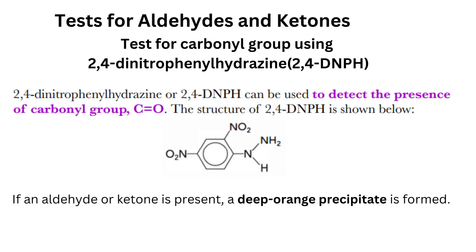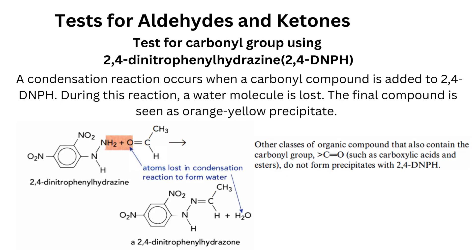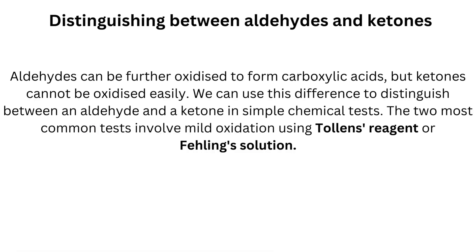Test for the carbonyl group using 2,4-dinitrophenylhydrazine (2,4-DNPH): 2,4-DNPH can be used to detect the presence of a carbonyl group. If an aldehyde or ketone is present, a deep orange precipitate is formed via a condensation reaction in which a water molecule is lost. Other classes of organic compounds that also contain the carbonyl group, such as carboxylic acids and esters, do not form precipitates with 2,4-DNPH.